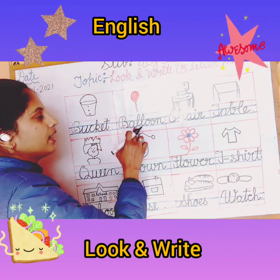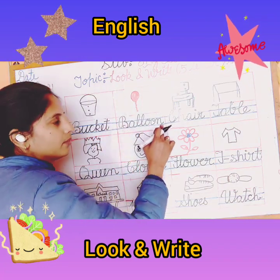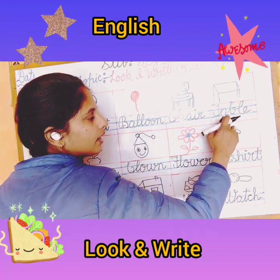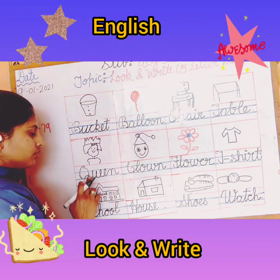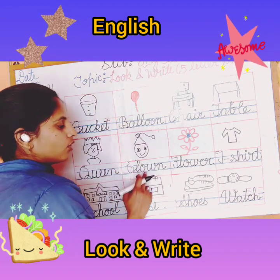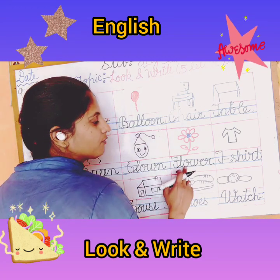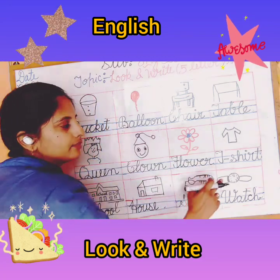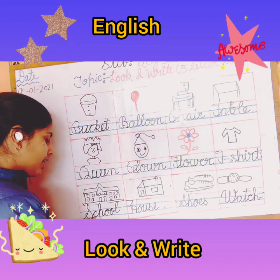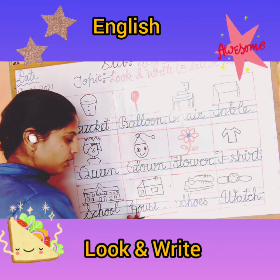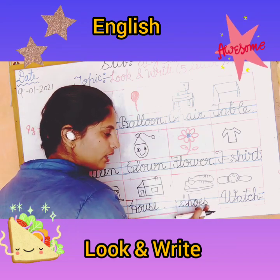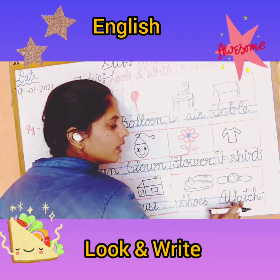B-U-C-K-E-T, Bucket. B-A-L-L-O-O-N, Balloon. C-H-A-I-R, Chair. T-A-B-L-E, Table. Q-U-E-E-N, Queen. C-L-O-W-N, Clown. F-L-O-W-E-R, Flower. T-S-H-I-R-T, T-shirt. S-C-H-O-O-L, School. H-O-U-S-E, House. S-H-O-E-S, Shoes. W-A-T-C-H, Watch.